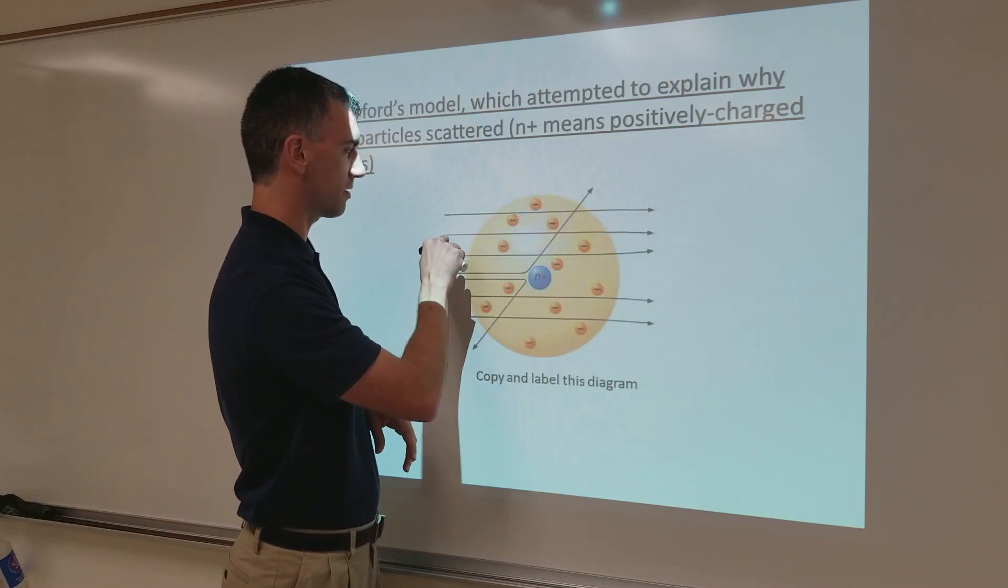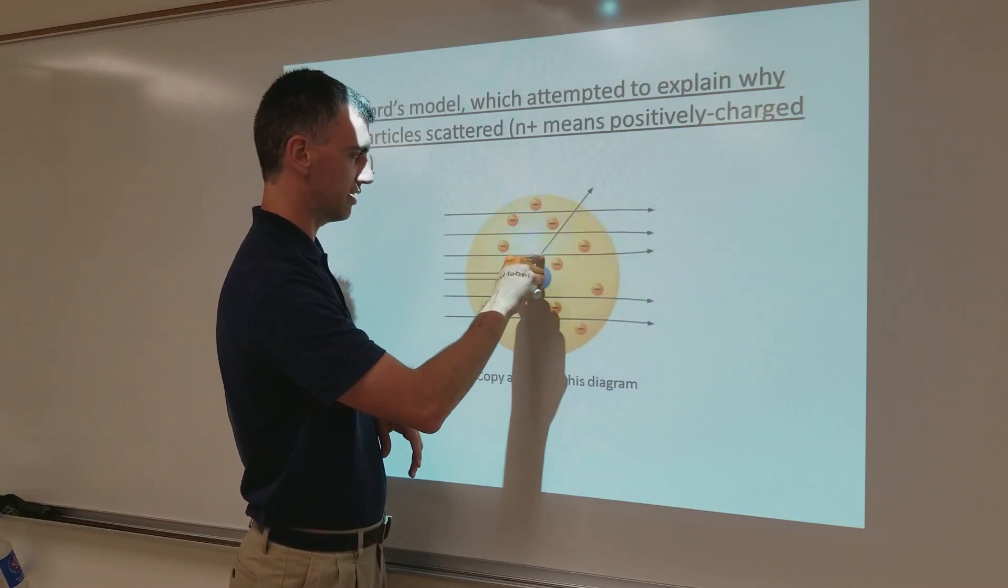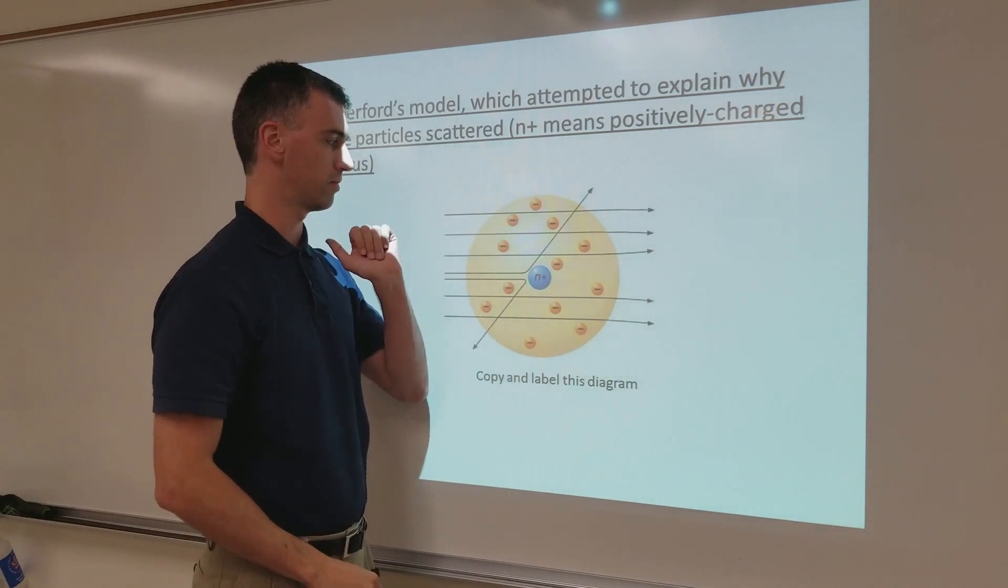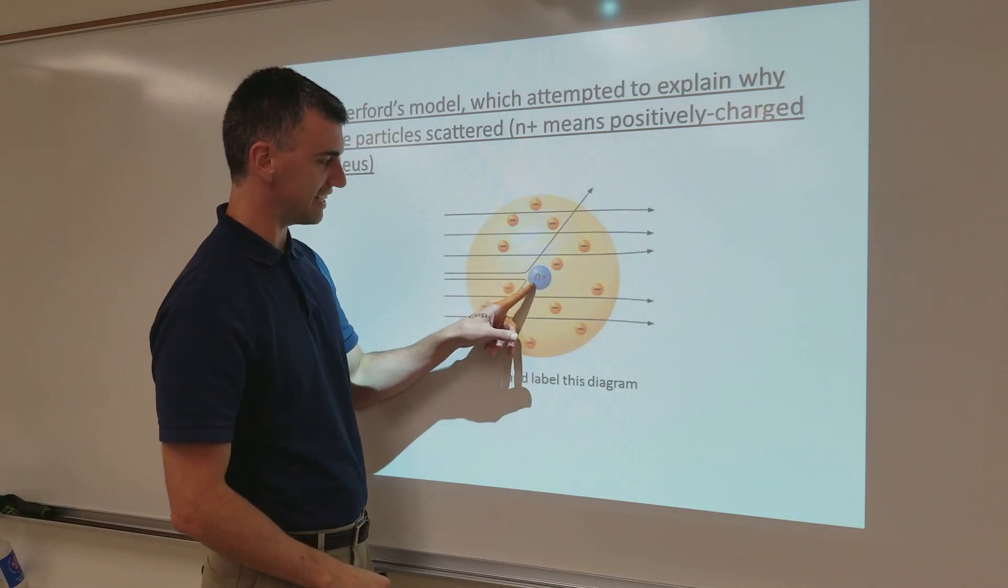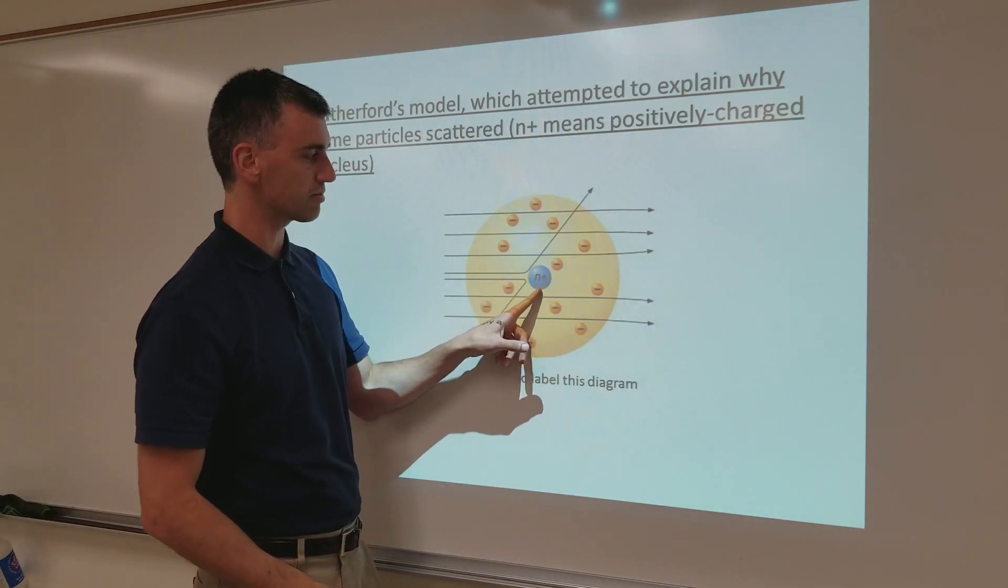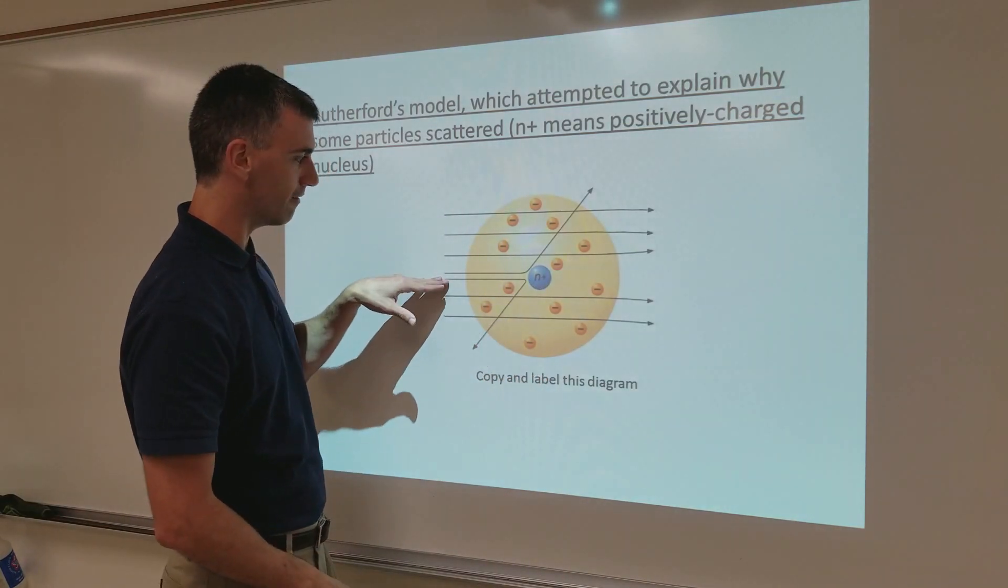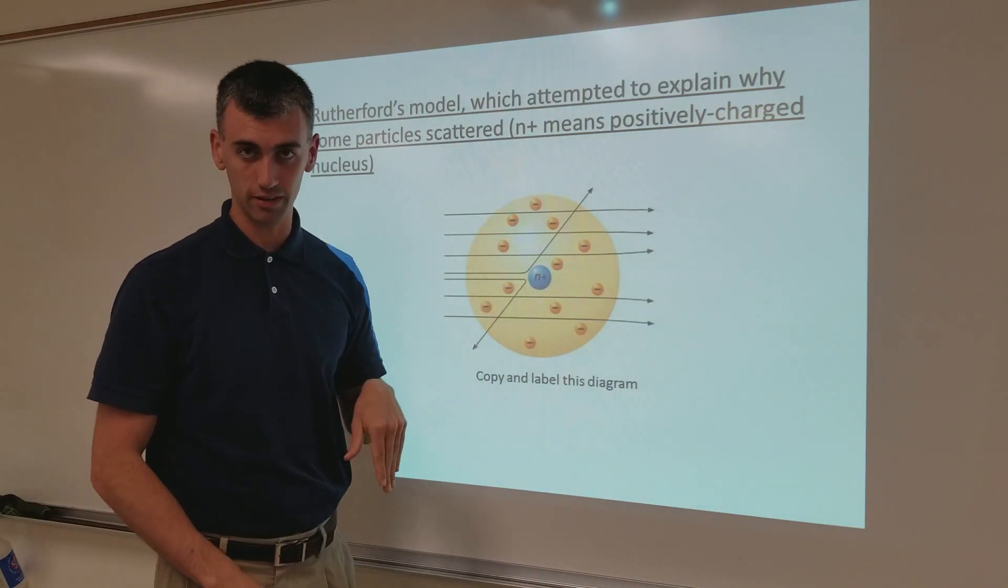So, the ones that went through the empty space, part of the atom, didn't deflect. They just went straight through. The ones that hit the teeny tiny nucleus in the center, the nucleus must be positively charged, because these positive alpha particles were not sticking. They were bouncing off instead.